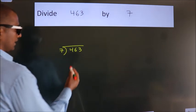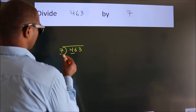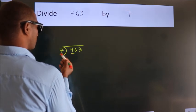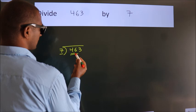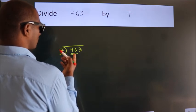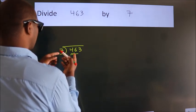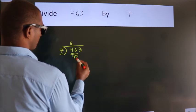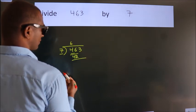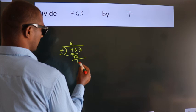Next, here we have 4, here 7. 4 is smaller than 7, so we should take two numbers: 46. A number close to 46 in the 7 table is 7×6=42. Now we should subtract. We get 4.